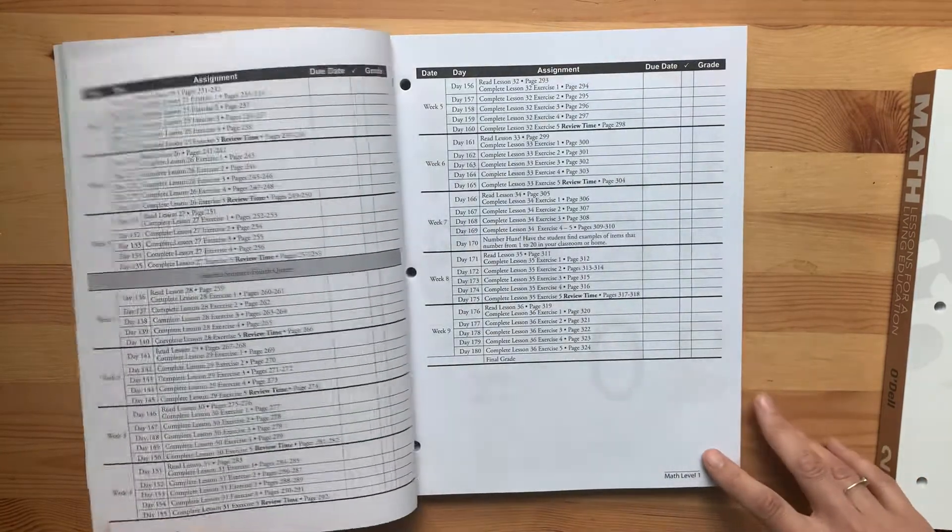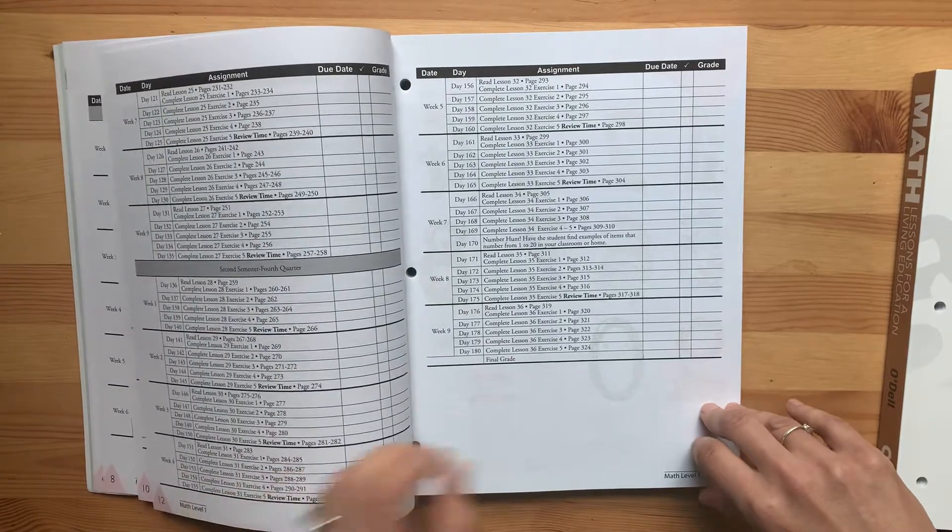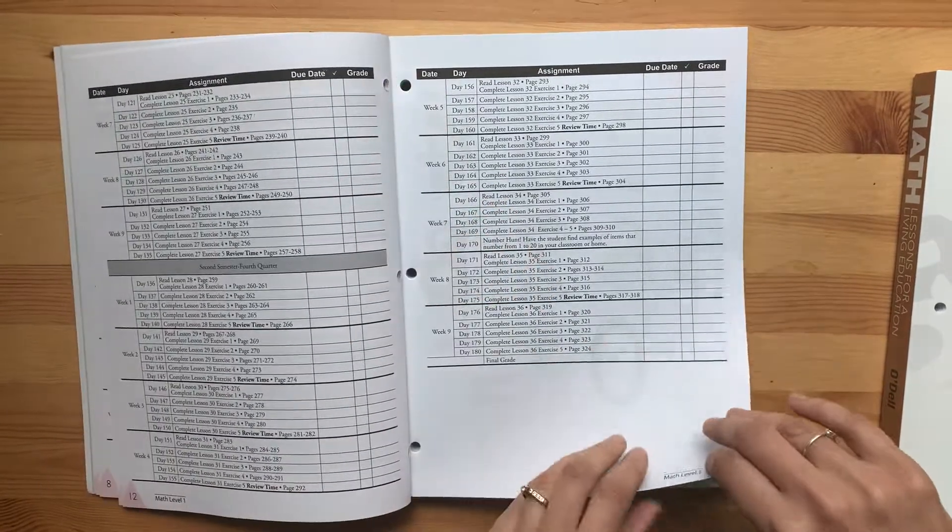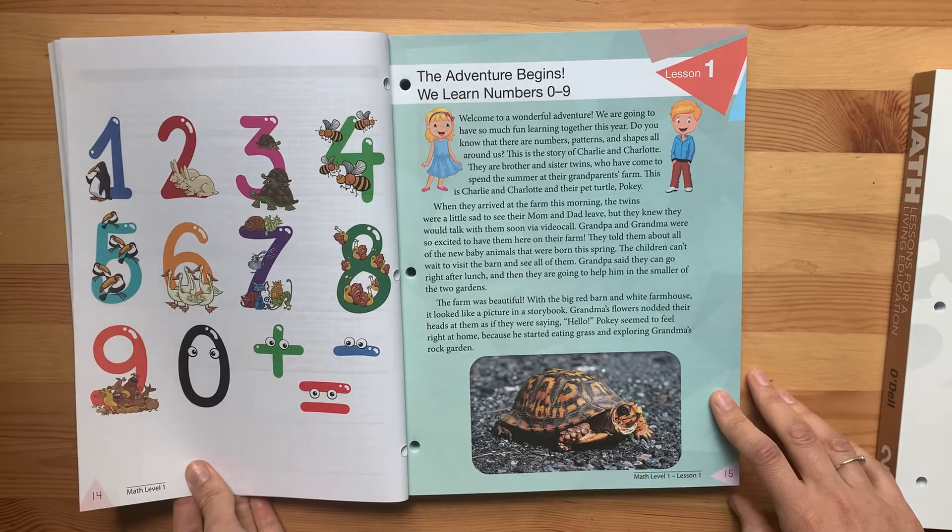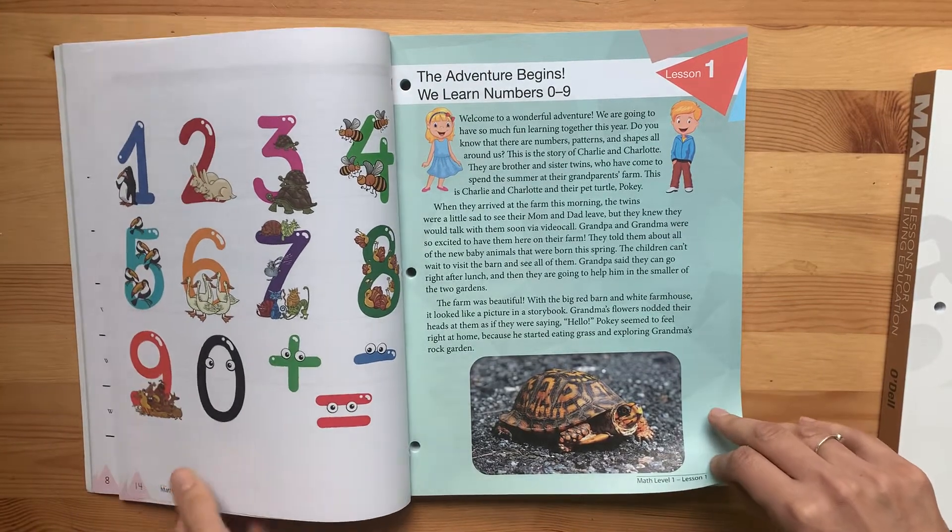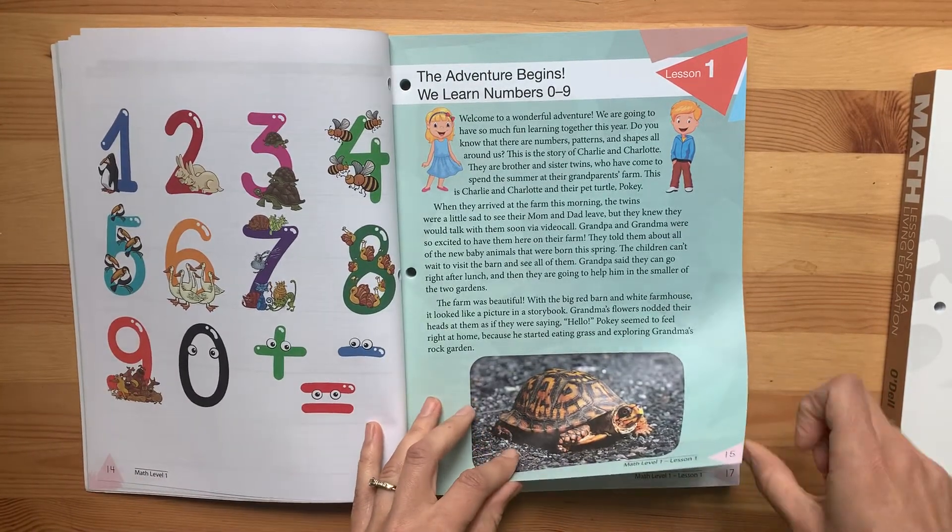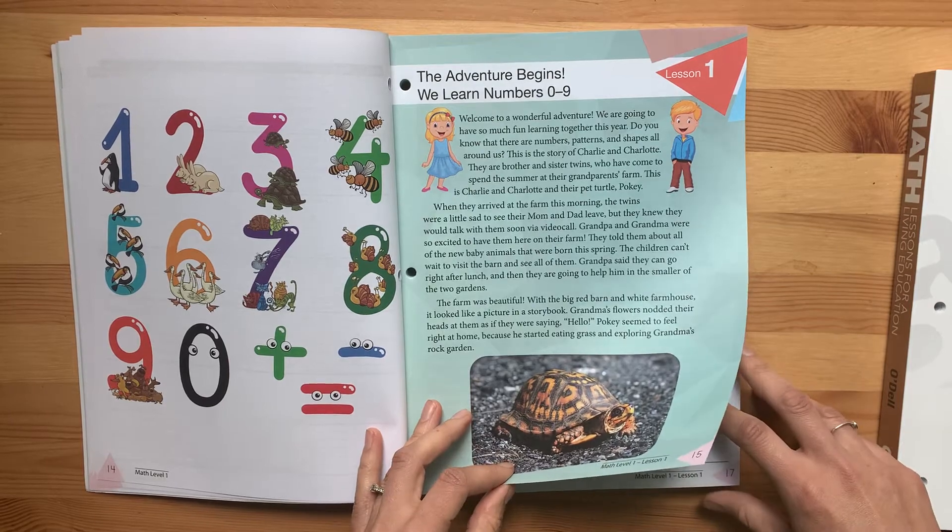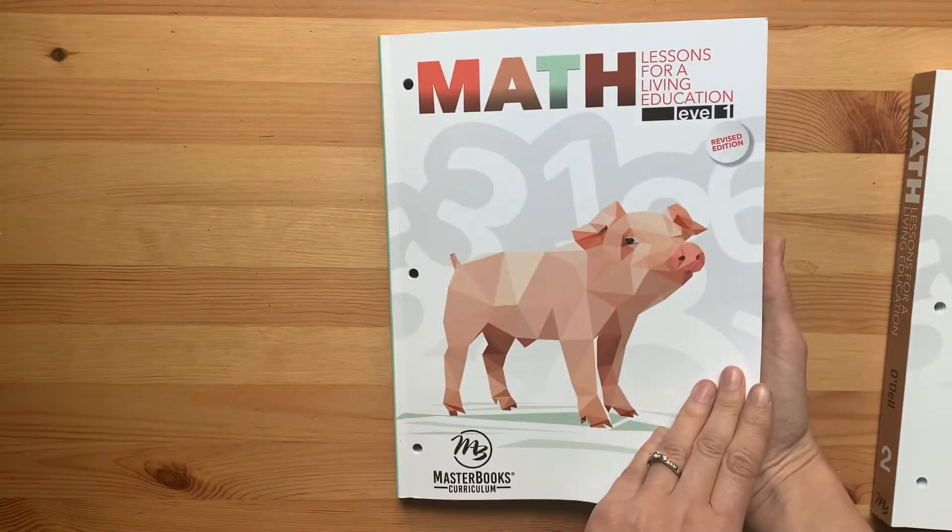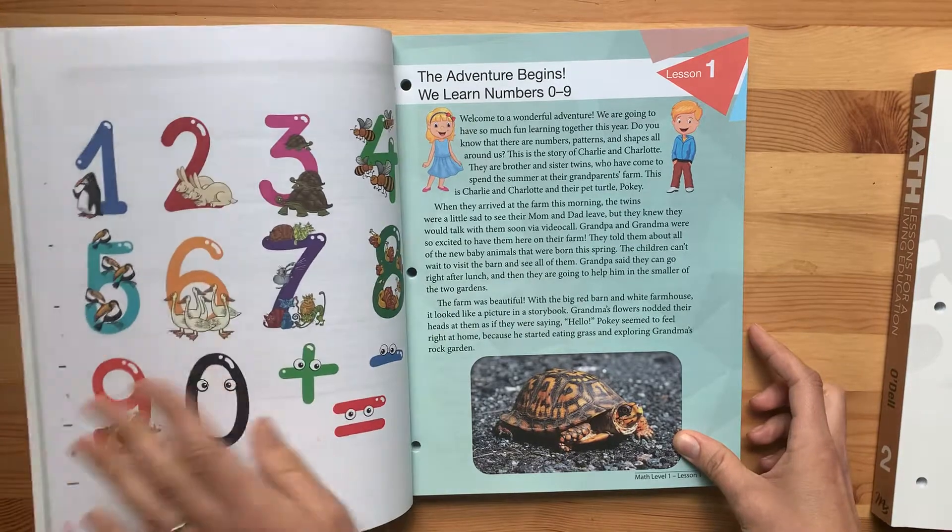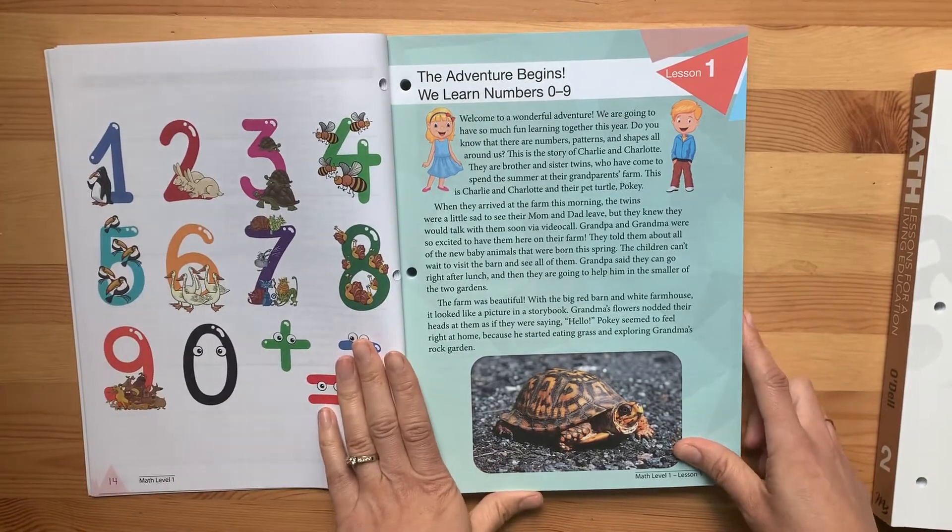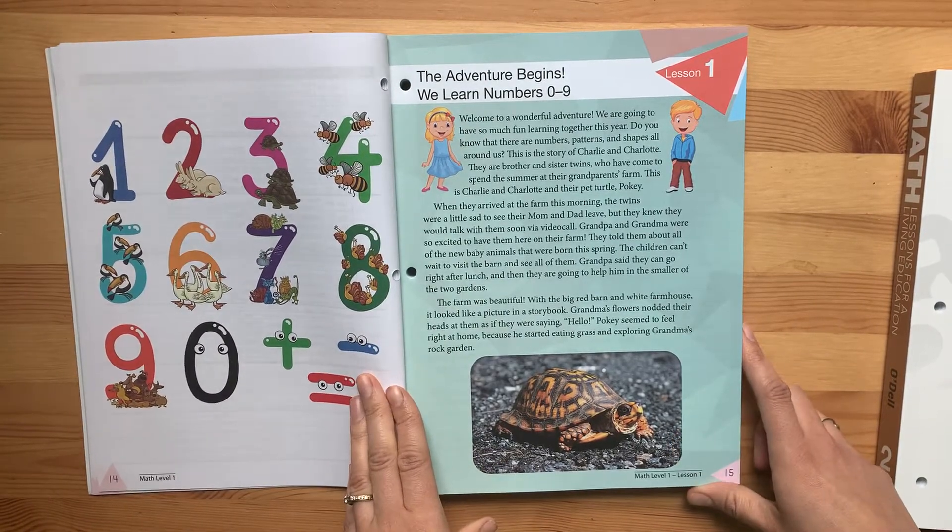The thing about Masterbooks that a lot of people like is that everything comes in one book. You're not going to have a teacher's manual, you just get this one book for everything for the year. And it's very inexpensive. This, I believe, was $30 for one level.